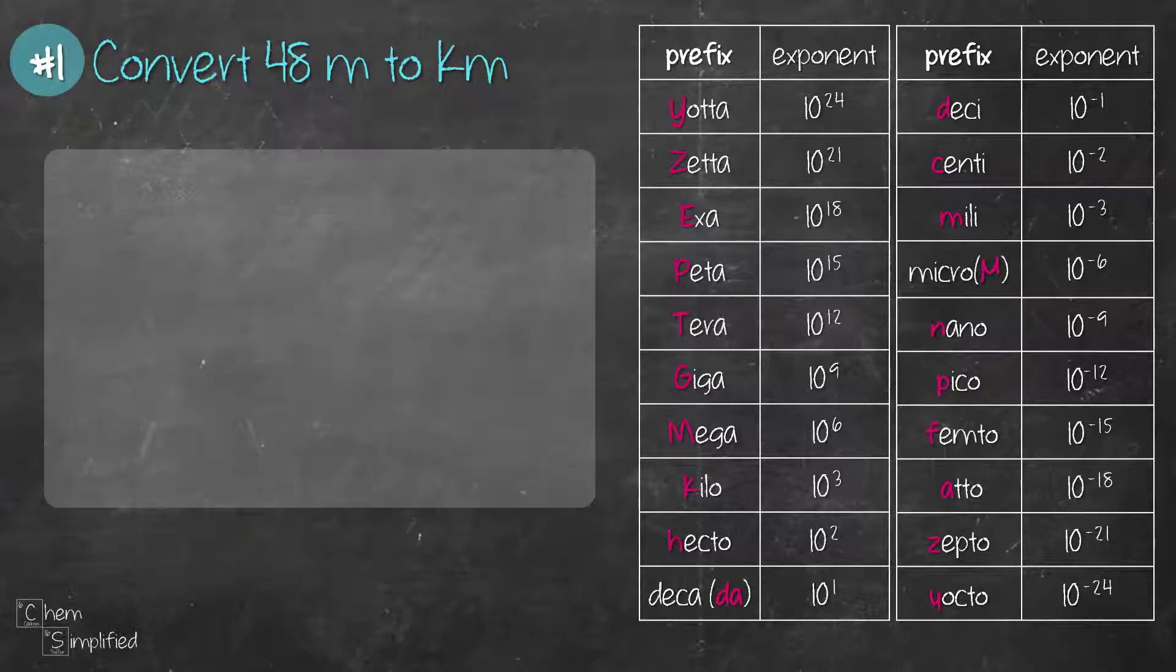The first question involves a conversion from base unit to prefix kilo. We're going to convert 48 meters to kilometers. We'll use dimensional analysis for this conversion.